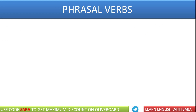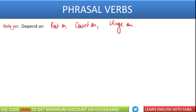Then we have phrasal verbs. Rely on — it is actually a phrasal preposition. Rely on के लिए बहुत सारे words हैं: rest on, count on, hinge on — इन सभी की meaning common है. Rely on, rest on, count on का मतलब होता है किसी के ऊपर depend होना. जैसे: do not rely on anyone else for your happiness — अपनी खुशी के लिए किसी और पर dependent नहीं होना है. Next we have devoid of. Devoid of — basically we say lack something, without something — किसी भी चीज़ की कमी, that is called devoid of.